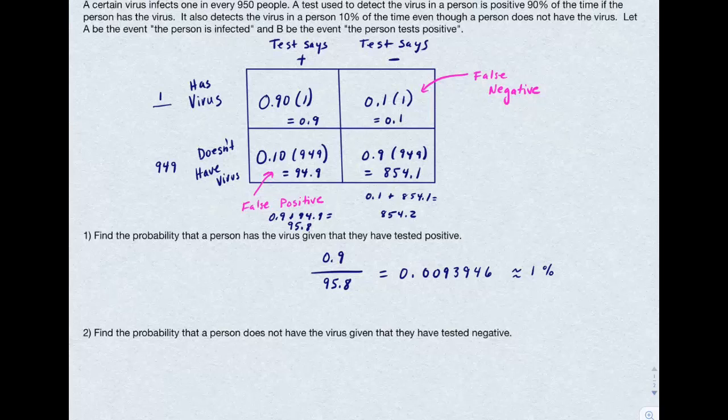The second problem asks for the probability that the person doesn't have the virus given that they've tested negative. Well, that's represented by the number 854.1. Those are the number of people who are tested negative and do not have the virus. We need to divide that by the total number of people who are tested negative, which is 854.2. So this shows that it's pretty good at correctly identifying people that don't have the virus when it's tested negative.